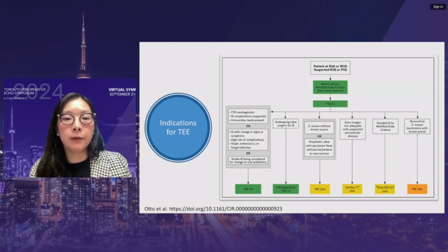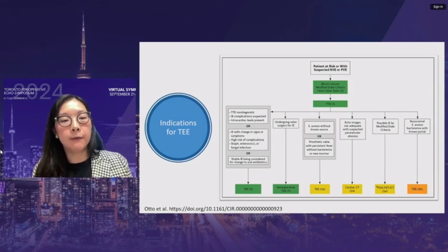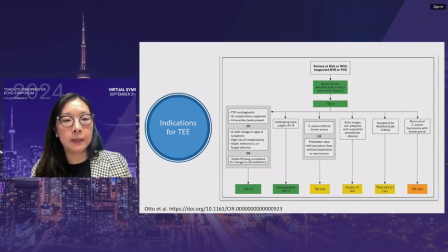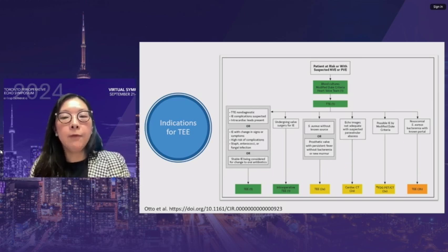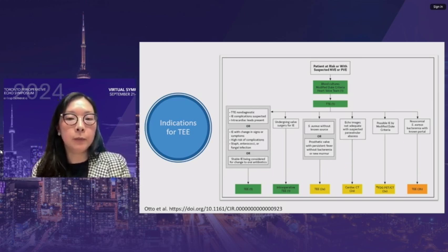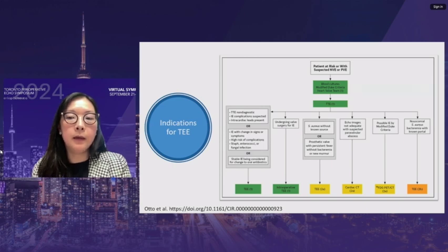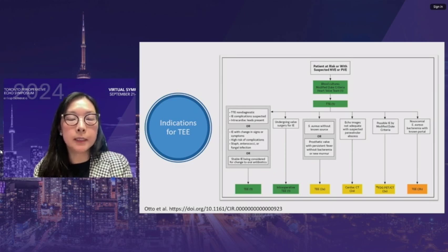For all patients undergoing valve surgery for infective endocarditis, intraoperative TEE is a Class 1 indication, because IE can have a prolonged and fluctuating course with changes from diagnostic to intraoperative studies. Staph aureus without a known source, or a prosthetic heart valve with persistent fever without bacteremia or a new murmur, is a 2A indication. Nosocomial staph aureus bacteremia with a known portal is now a 2B indication. Importantly, approximately 30% of staph aureus bacteremia patients will have infective endocarditis.